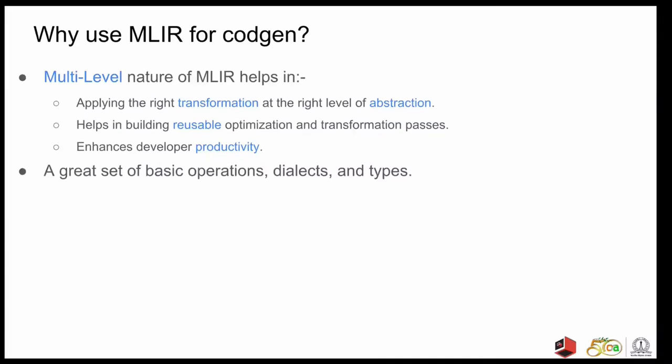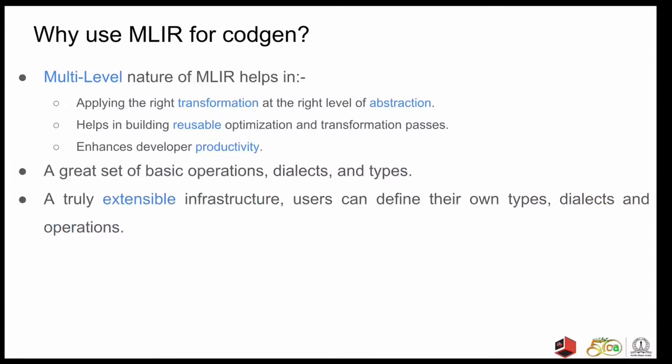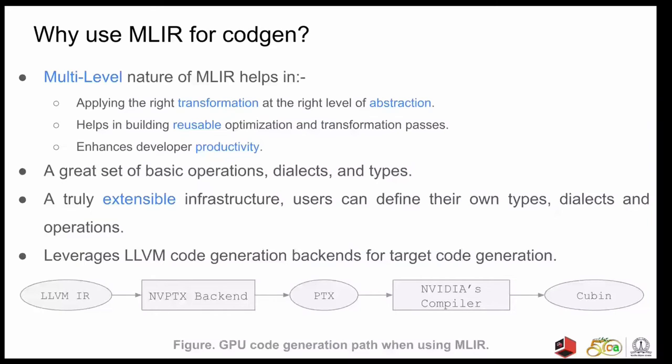MLIR has a great set of basic operations, dialects, and types, and is a truly extensible infrastructure. Users can define their own types, dialects, and operations. It leverages LLVM's code generation backend for target code generation which are fairly well developed and quite reliable to use. So when using MLIR for NVIDIA GPU code gen, one has to lower the MLIR to LLVM IR after doing all the transformations. Then PTX is emitted by the LLVM in the PTX backend which is given to NVIDIA's proprietary compiler to get the final executable binary.